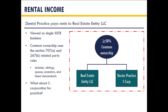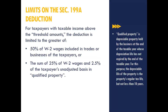The 199A deduction also has limits based on 50% of W-2 wages. For example, if you make $100,000 in the business but only pay $20,000 in wages, you're capped at 50% of wages — which is $10,000 — rather than 20% of $100,000 ($20,000). There's also a second phase-out threshold based on qualified property, but that typically doesn't apply to this industry because wages from hygiene, dental assistants, and office admin are so substantial. The key limitation to watch out for is that 50% of W-2 wages cap.